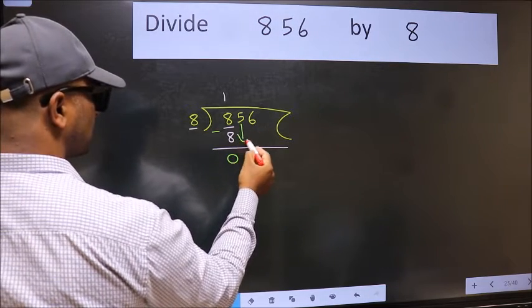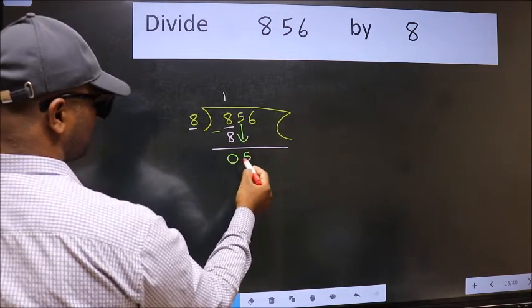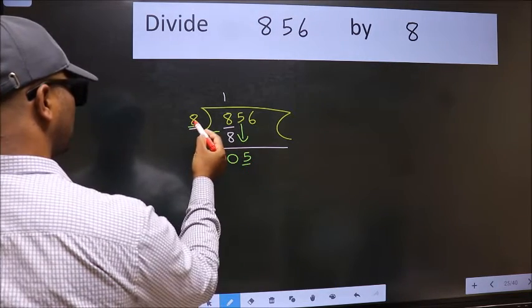After this, bring down the beside number. So, 5 down. Now here we have 5 and here 8.